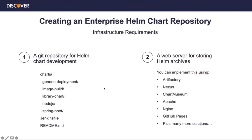When creating an enterprise Helm chart repository, there are specific requirements. For the codebase, we maintain the Helm chart source code in GitHub following a specific structure: a series of Helm charts maintained in the GitHub repo along with the README and its pipeline. For storing the Helm charts, we use an image registry — in our case Artifactory, though one can also use Nexus — as the image registry along with the Helm chart repository.